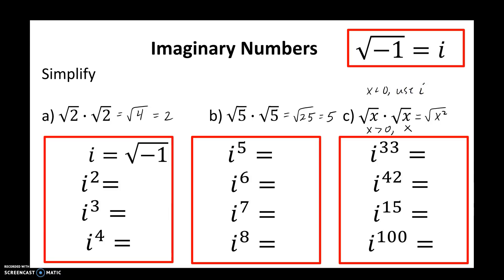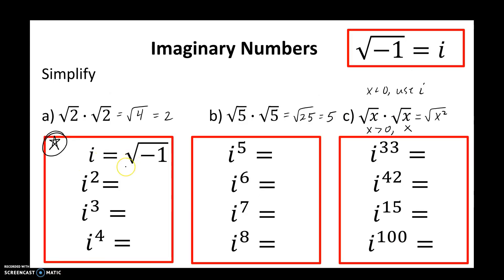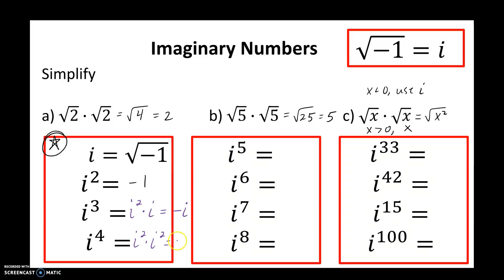We have an example of this later in the video. These powers of i are very important. If i equals the square root of negative 1, squaring both sides gives i squared equals negative 1. Using properties of exponents, i cubed equals i squared times i, and replacing i squared with negative 1, i cubed simplifies to negative i. For i to the 4th, thinking of it as i squared times i squared: negative 1 times negative 1 gives positive 1. You can attempt to simplify the other eight powers; we will do those in class.